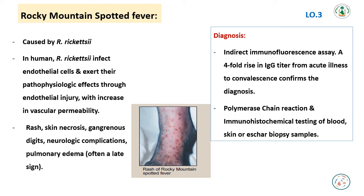The diagnosis is through indirect immunofluorescent assay; a 4-fold rise in IgG titer from acute illness to convalescence confirms the diagnosis. Also, polymerase chain reaction and immunohistochemical testing of blood, skin, or eschar biopsy samples can be used.